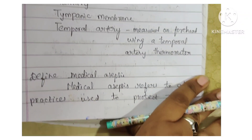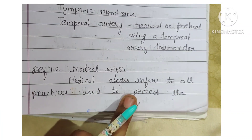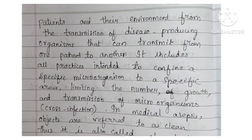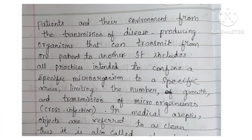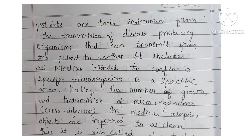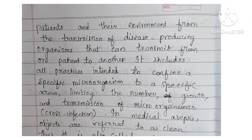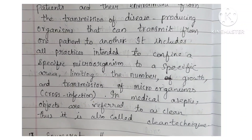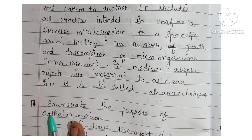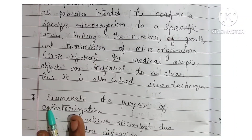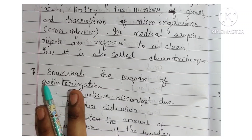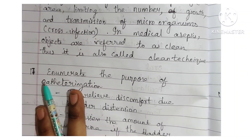Next: define medical asepsis. Medical asepsis refers to all practices used to protect the patients and their environment from the transmission of disease-producing organisms that can transmit from one patient to another. It includes all practices intended to confine a specific microorganism to a specific area, limiting the number, growth and transmission of microorganisms — also called cross infection control. In medical asepsis, objects are referred to as clean; thus it is called a clean technique.